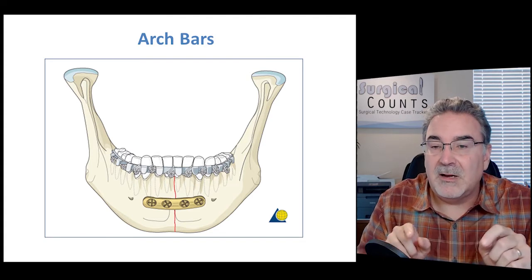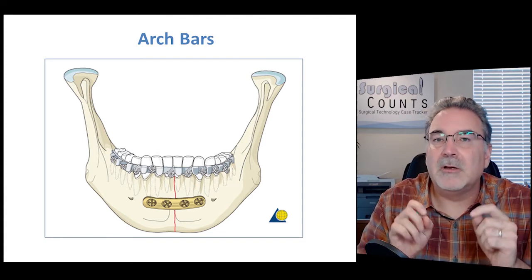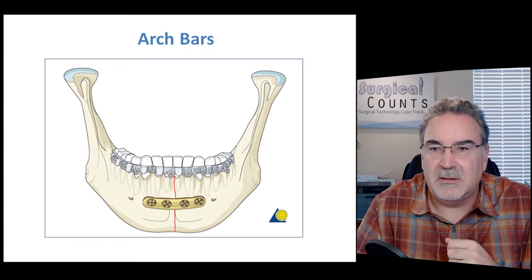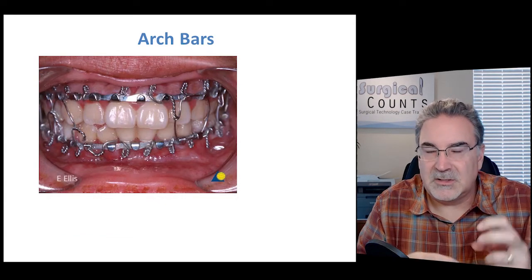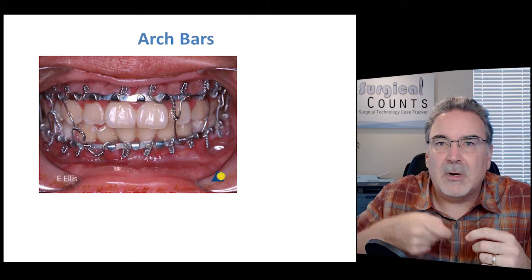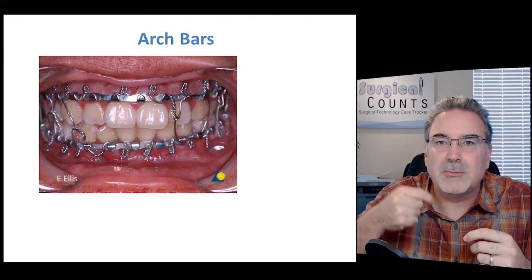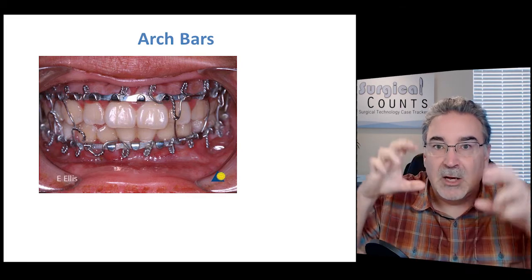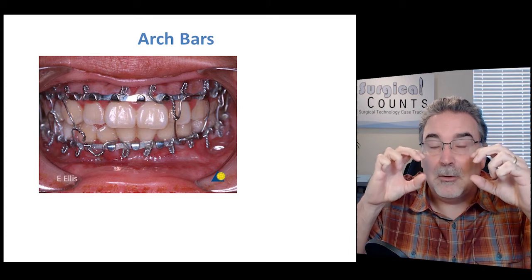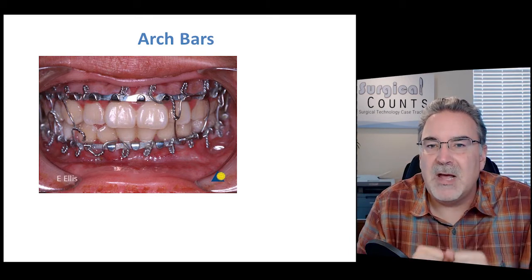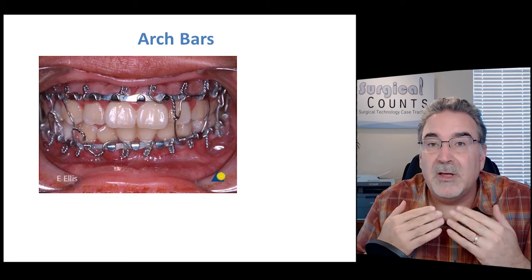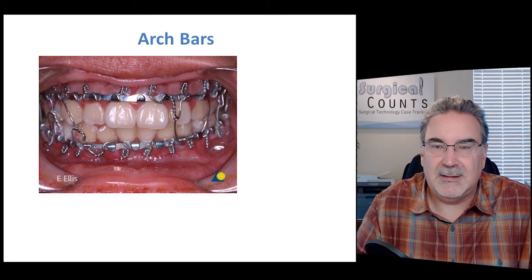We apply arch bars to the bottom teeth and do exactly the same thing across the upper teeth as well. The little hooks allow us to run wire up and down from one arch bar to the next, holding the two arch bars tightly together — holding the mouth very tightly closed so that the patient can't move it while the bone is healing.